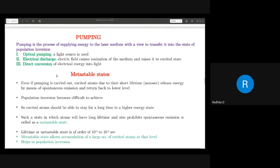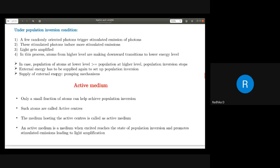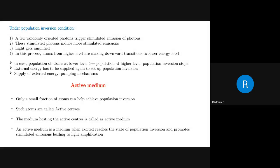A few concepts of how stimulated emission takes place in a laser. The first thing you need is population inversion — you should have more atoms in the high energy level than the low energy level. The second concept is active medium, which is a medium containing all the atoms that help in this process. These atoms are called active centers, and the medium consisting of them — whether solid or gaseous — is called the active medium.